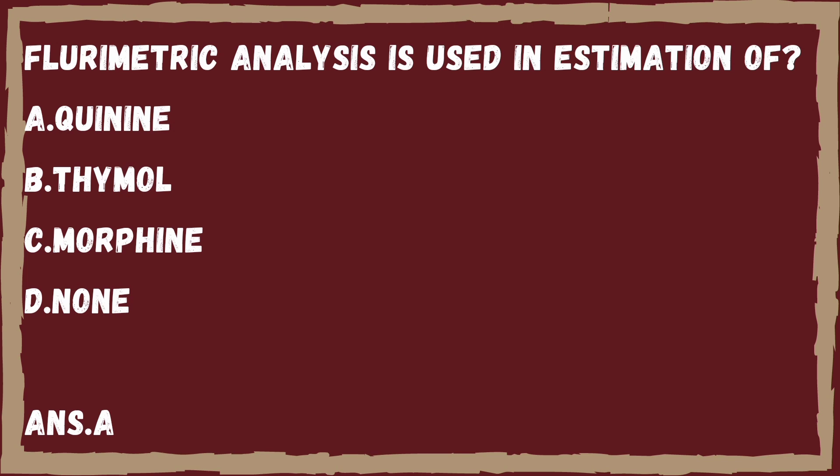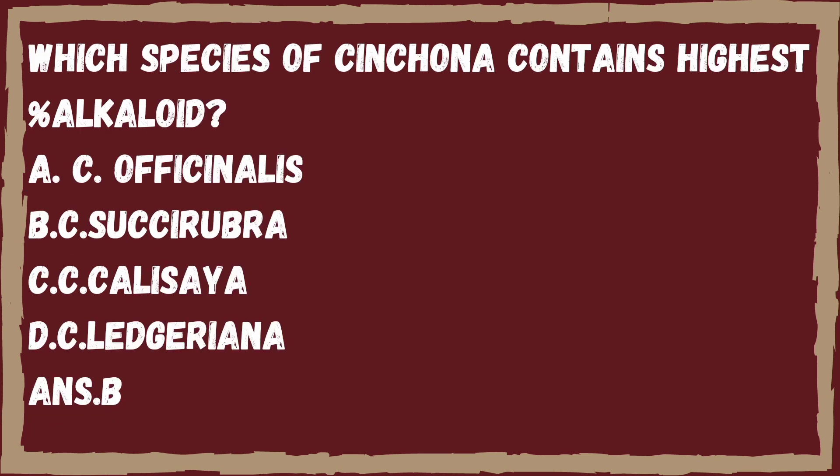Next question: which species of Cinchona contains the highest percentage of alkaloid? Option A, Cinchona officinalis. Option B, Cinchona succirubra. Option C, Cinchona calisaya. Option D, Cinchona ledgeriana. The right answer is Option B, Cinchona succirubra. The alkaloid present in Cinchona is a quinoline alkaloid, and the highest percentage is found in Cinchona succirubra.